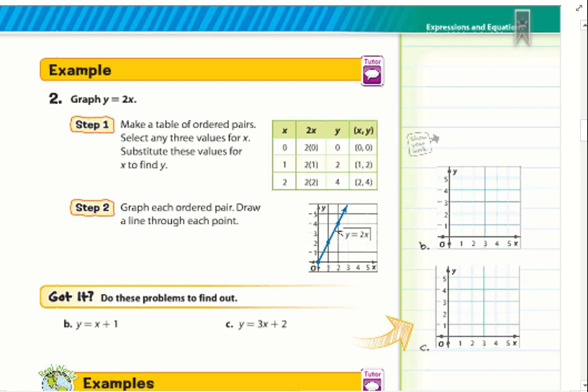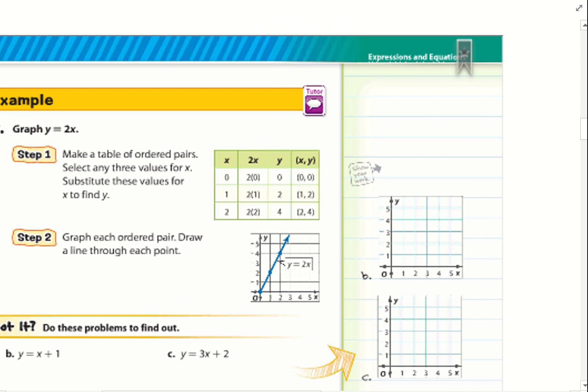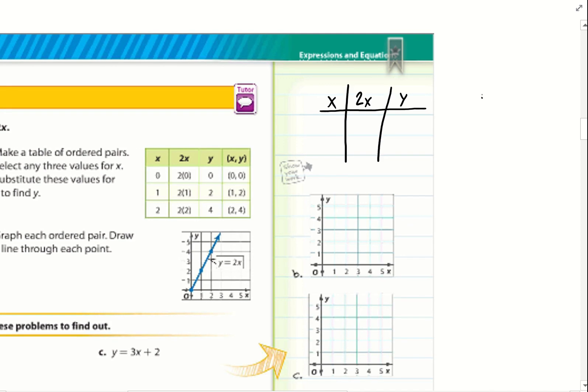Example two: graph y equals 2x. Step one, make a table of ordered pairs, then select any values for x and substitute these values to find y. We have to graph y equals 2x. I'm going to make my function table. So I have x, and then my function is 2x, and then I have y. My function is 2x equals y. If x equals 0, 2 times 0 is 0, and that means y equals 0.